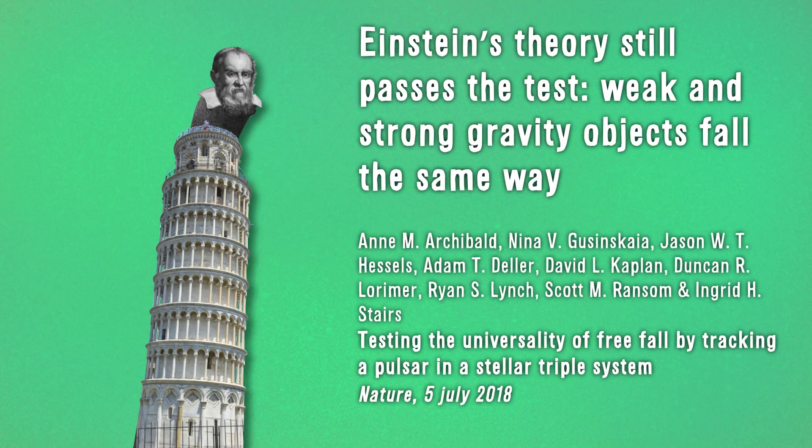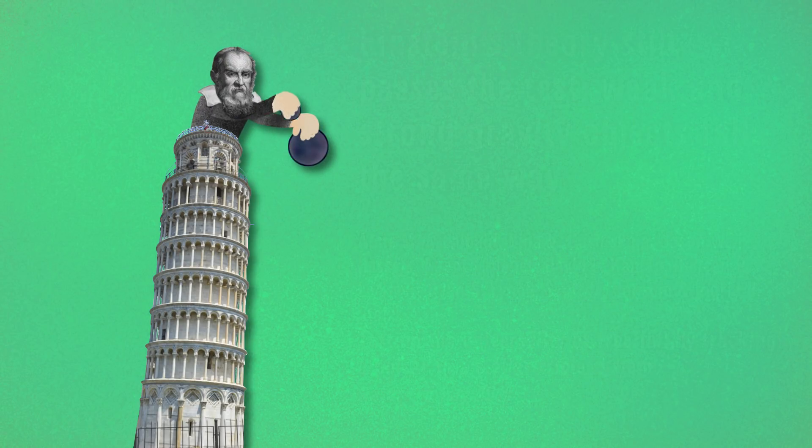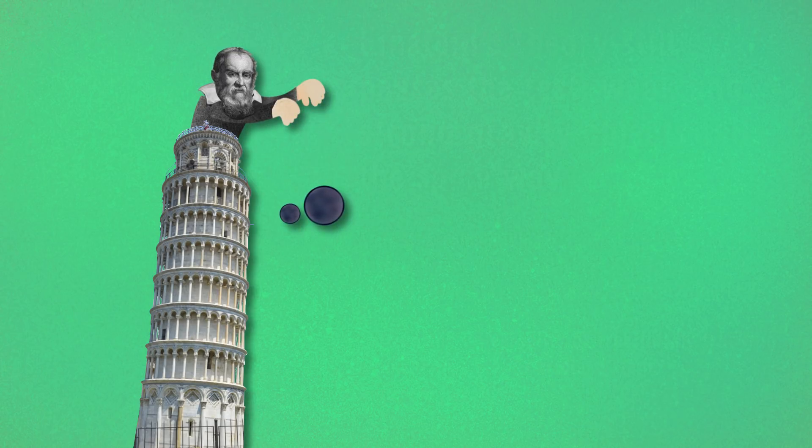In 1589, Galileo famously dropped two cannonballs, a heavy one and a lighter one, from the Leaning Tower of Pisa to show that they would hit the ground at the same time. But it's not clear that he actually really performed this experiment.